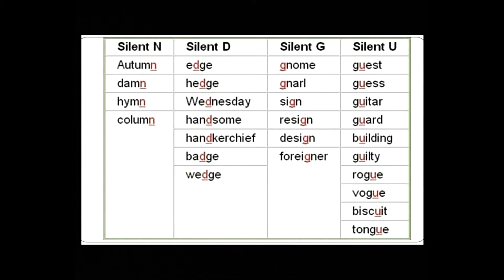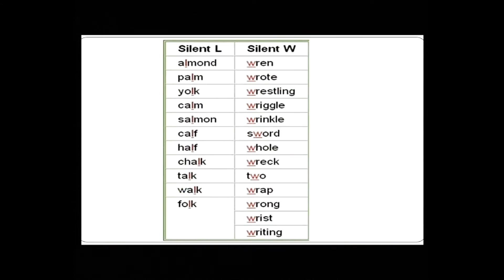Silent U words: guest, guess, guitar, guard, building, guilty, rogue, vogue, biscuit, tongue. Words with silent L: almond, palm, yolk, calm, salmon, calf, half, chalk, talk, walk, folk.